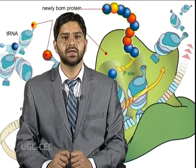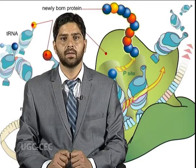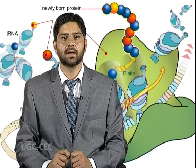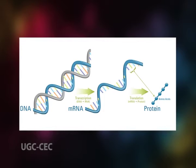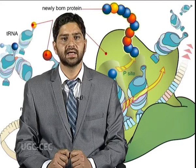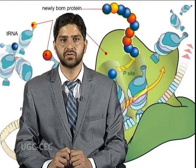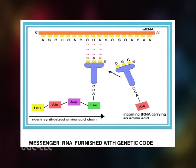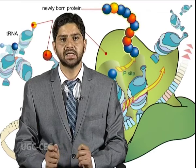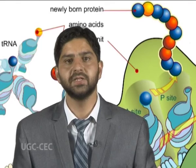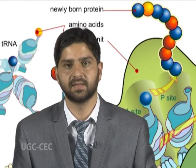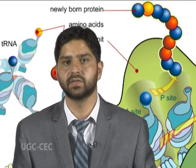Following transcription of the primary transcript — mRNA known as pre-mRNA — by RNA polymerase, it is processed and the mature mRNA is translated into a polymer of amino acids, a protein, as summarized in the central dogma of molecular biology. As in DNA, mRNA genetic information is in the sequence of nucleotides arranged into codons consisting of three base pairs each. Each codon encodes for a specific amino acid, except the stop codon which terminates protein synthesis.